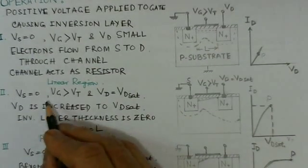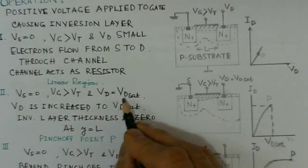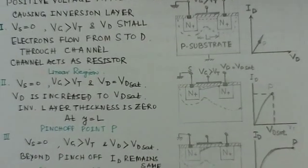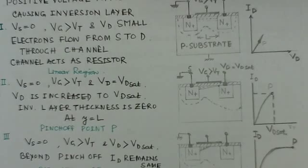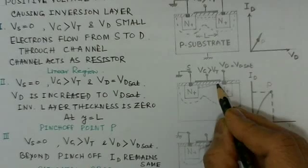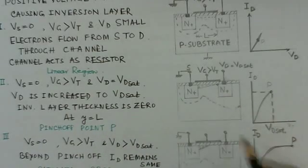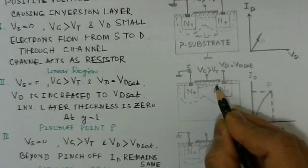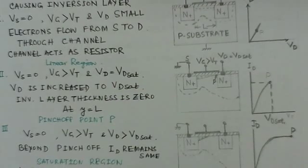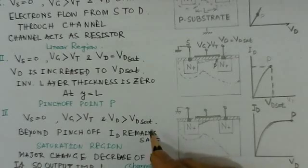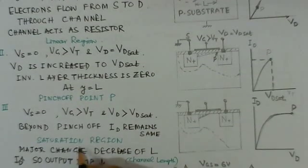The other operation region is when the source is again zero and the gate voltage is greater than threshold voltage Vt, but the drain voltage Vd is greater than the saturation value Vd_sat. When Vd exceeds Vd_sat, the inversion layer thickness becomes zero at the drain point. This is the pinch-off point, at y equal to L. At this pinch-off point, the current has its maximum value. When Vd is increased further beyond Vd_sat, the drain current Id remains the same and the saturation region is reached.